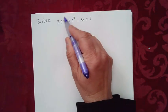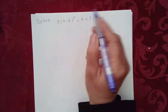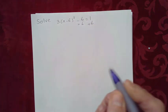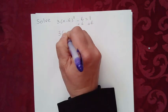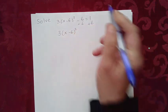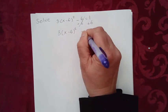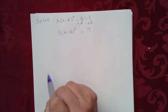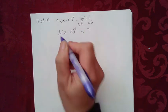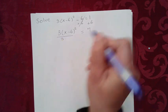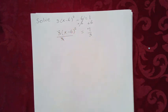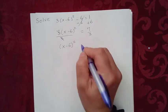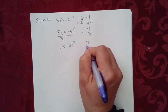If you recall the square root property, you want to isolate whatever is being squared. So let's go ahead and add 6 on both sides. When we add 6 on both sides, we get 3 times (x minus 6) to the second power — this cancels — equal to 1 plus 6, which is 7. Now we want to isolate this, so we need to divide by 3 on both sides. If we divide by 3, this will cancel and you'll be left with (x minus 6) raised to the second power equals 7 over 3.